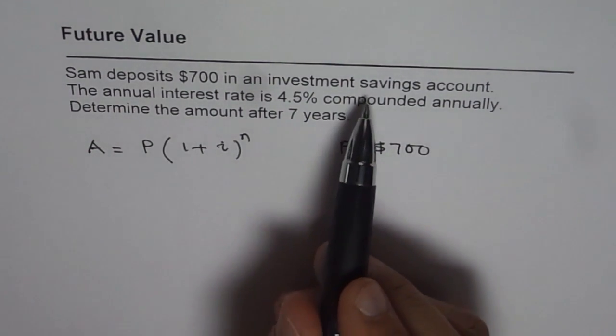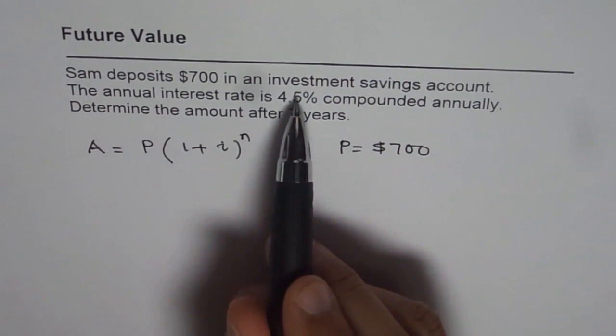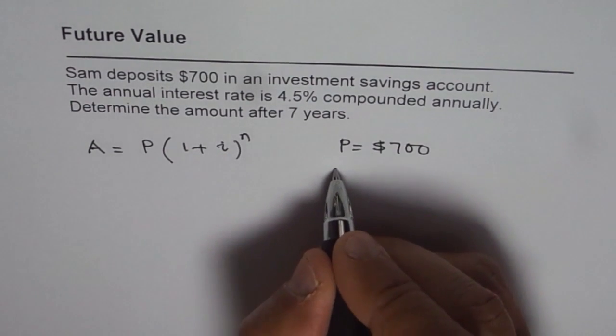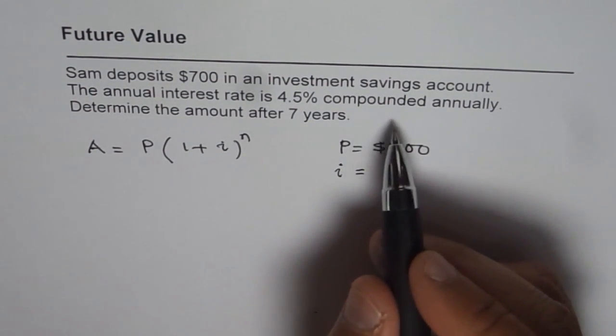Now it is deposited into a savings account which gives interest at the rate of 4.5% compounded annually. So I is the interest rate during the compounding period.